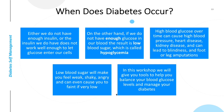High blood glucose over time can cause high blood pressure, heart disease, kidney disease, and can lead to blindness and foot or leg amputations. Low blood sugar will make you feel weak, shaky, sometimes angry, and can even cause you to faint if very low. In this workshop, we will give you tools to help you balance your blood glucose levels and manage your diabetes.